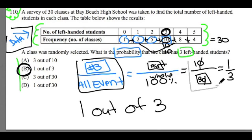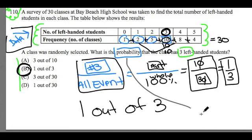And we figured out that out of the thirty classes, one out of three classes are going to have those three left-handed students. Whenever you think of probability, you should also be thinking of part-to-whole relationships. Part-to-whole. And we're thinking about the likelihood of something happening. That's our part out of the whole.